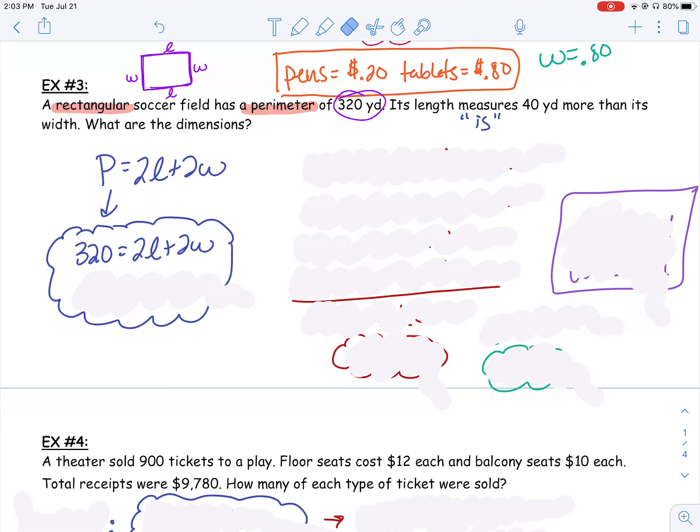I'm going to go ahead and distribute the 2 through my parentheses. That gave me 320 equals 2w plus 80 plus 2w. I noticed that I have a 2w and a 2w on the same side of the equal to sign, so I should be able to combine like terms. That gave me a 4w plus 80 on that side.